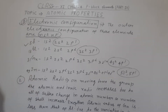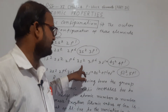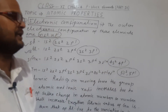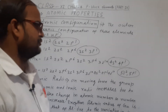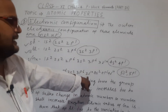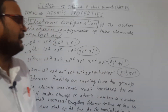Boron, atomic number 5: 1s², 2s², 2p¹. Aluminium: 1s², 2s², 2p⁶, 3s², 3p¹. Gallium: 1s², 2s², 2p⁶, 3s², 3p⁶, 3d¹⁰, 4s², 4p¹. Indium: 1s², 2s², 2p⁶, 3s², 3p⁶, 3d¹⁰, 4s², 4p⁶, 4d¹⁰, 5s², 5p¹.